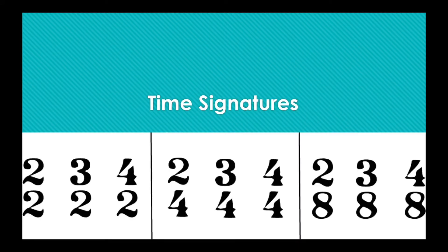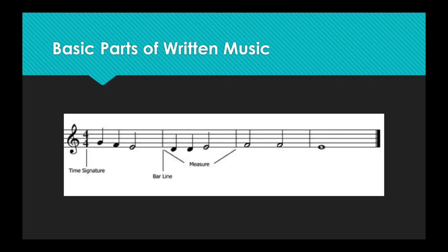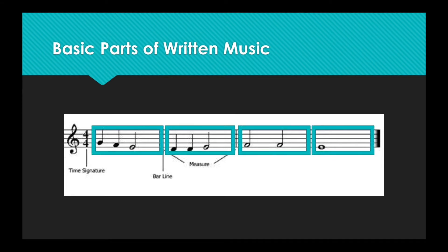Let's start out by talking about time signatures. Before we begin, it's a good idea to learn about the basic parts of written music. There are notes and rests, but there's so much more to it than that. Take this line of music — it is split into four bars, or measures, that are split apart by bar lines. At the end of a song, there are double bar lines to show that the song has ended and you can stop playing. But what are those two numbers over there?